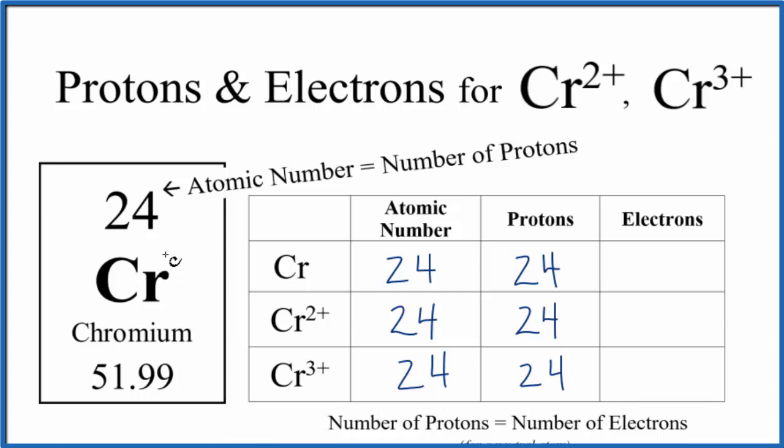We know that chromium here on the periodic table is neutral because there's no negative or positive after it. So we have 24 protons. That'll equal the number of electrons for neutral chromium. Let's put a 24 there.